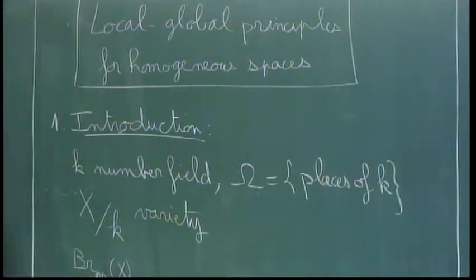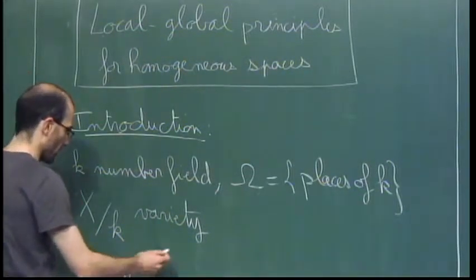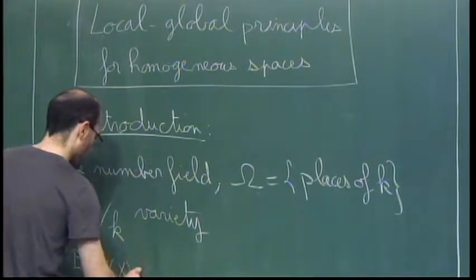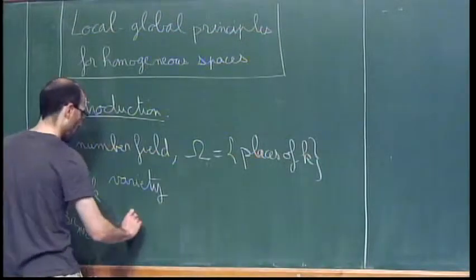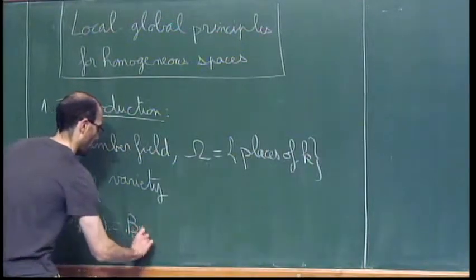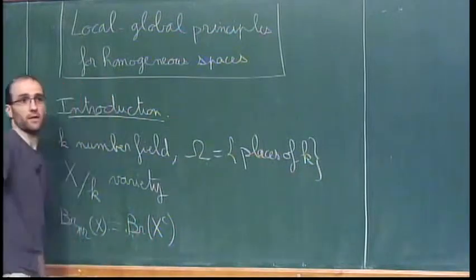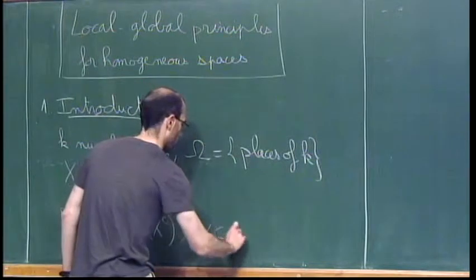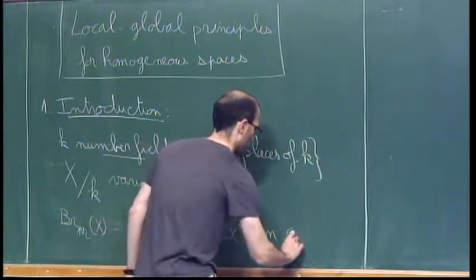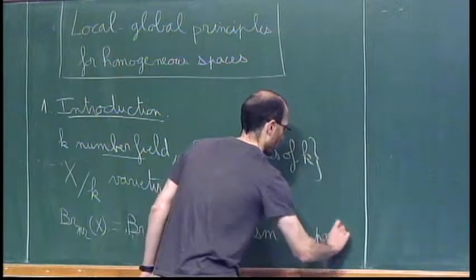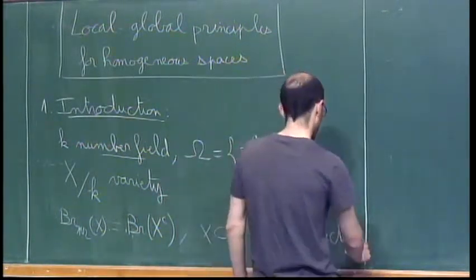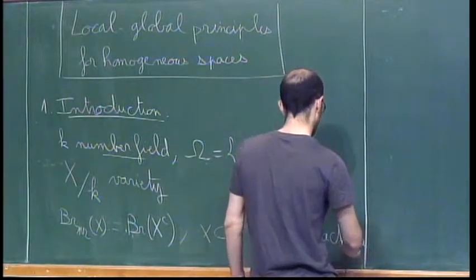We saw the definition of unramified homology in the lectures by Elena. Maybe the easiest way to define it will be to take the Brauer group of a smooth compactification of x — it exists because we are over number fields, so x_c is a smooth compactification — or it can be defined via residues, as we have seen before.